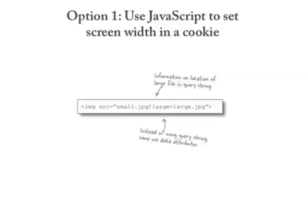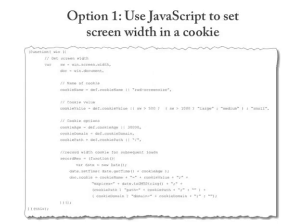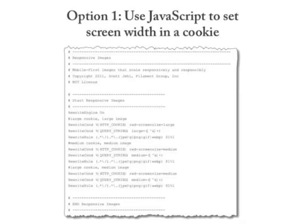The first option is to use JavaScript to set screen width in a cookie. You have an image tag containing information for the small and large versions of the image — the large version is appended to URL parameters or stored in an HTML5 data attribute. JavaScript sets a screen width cookie delivered to the server, which then picks the correct image. Many of these scripts use an .htaccess file with rewrite rules that look at the cookie's contents and decide which image to download.